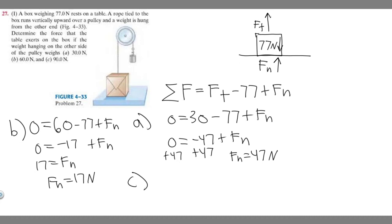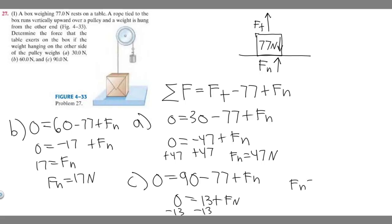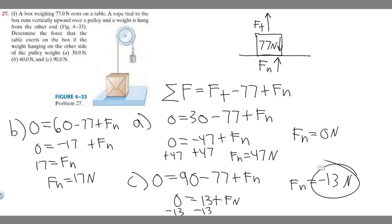Part C is a bit of a trick question. Plugging in 90 newtons for the tension: 0 = 90 − 77 + F sub n, which gives 0 = 13 + F sub n, so F sub n equals −13 newtons. But a table can't push with a negative force — it can't pull the box down. So in reality the normal force is zero newtons. The box has lifted off the table. That's the answer to part C: zero newtons.